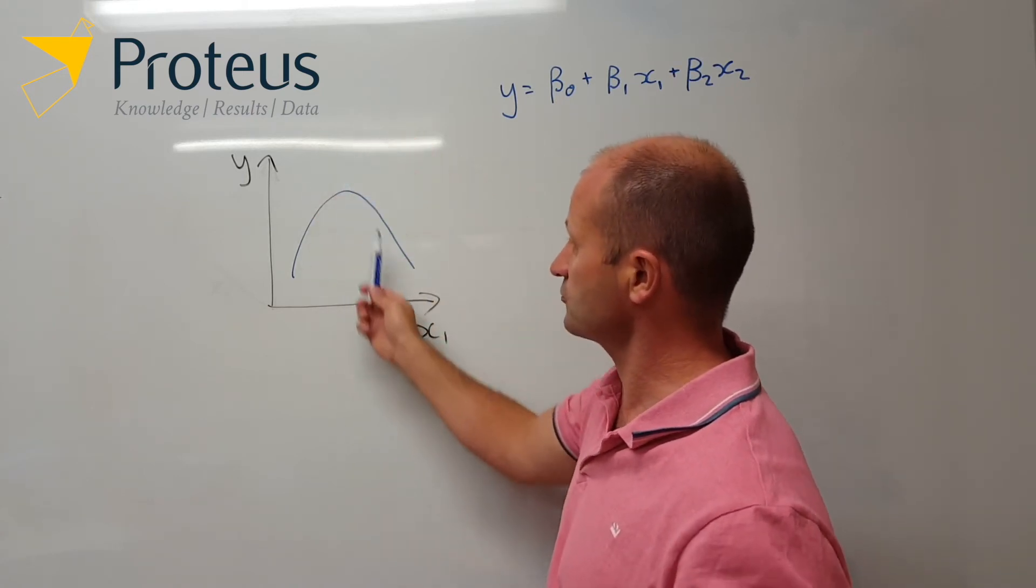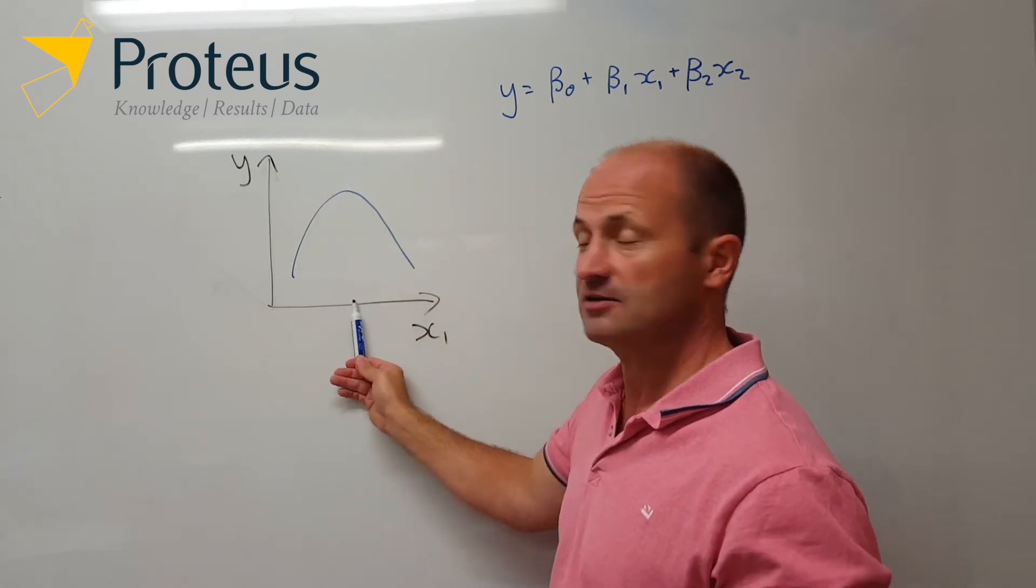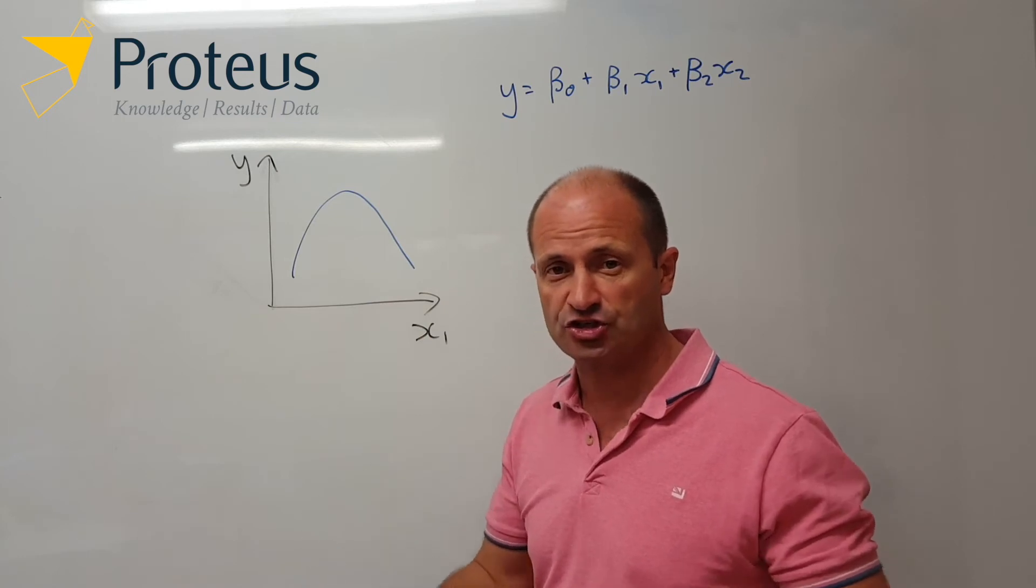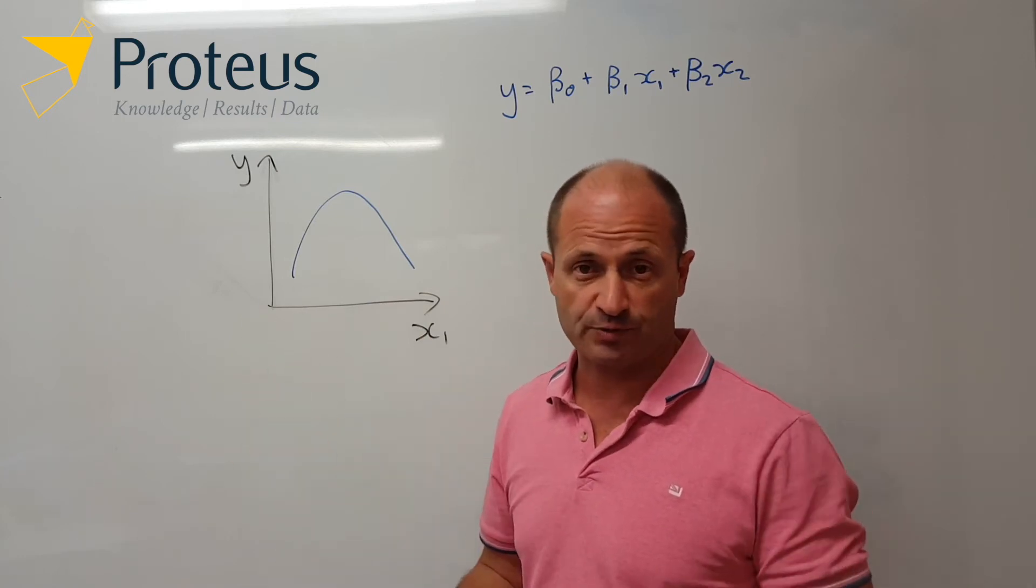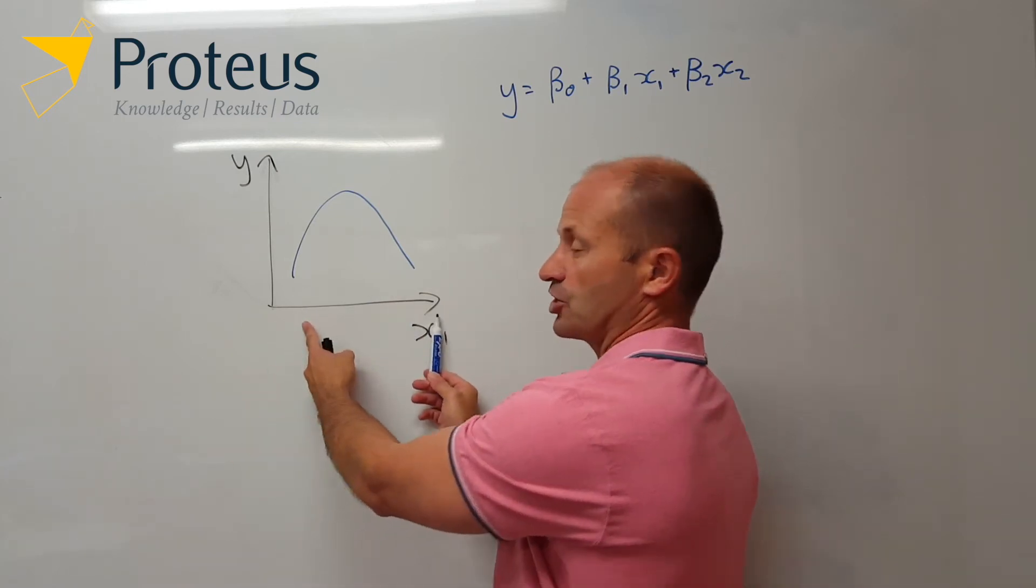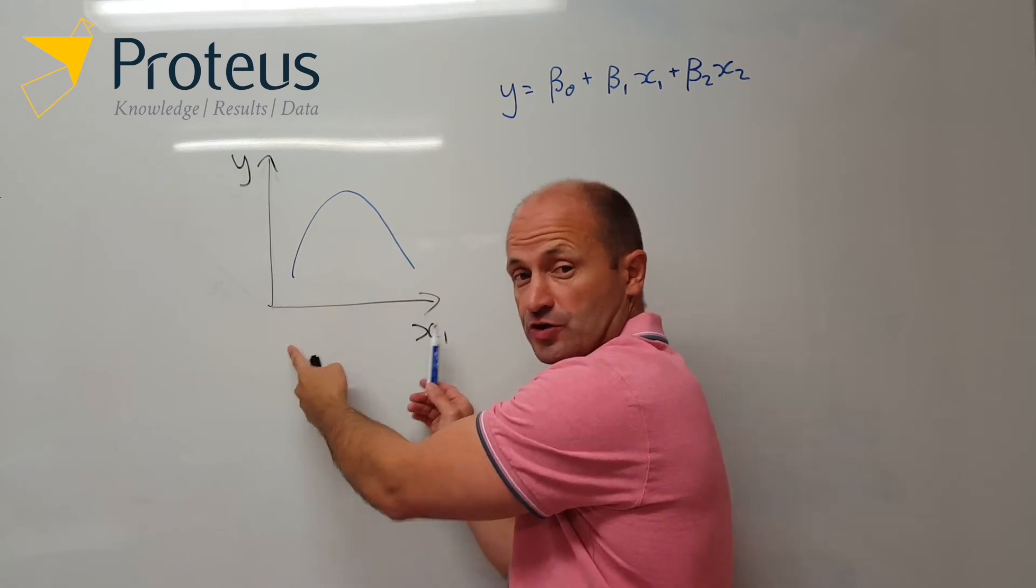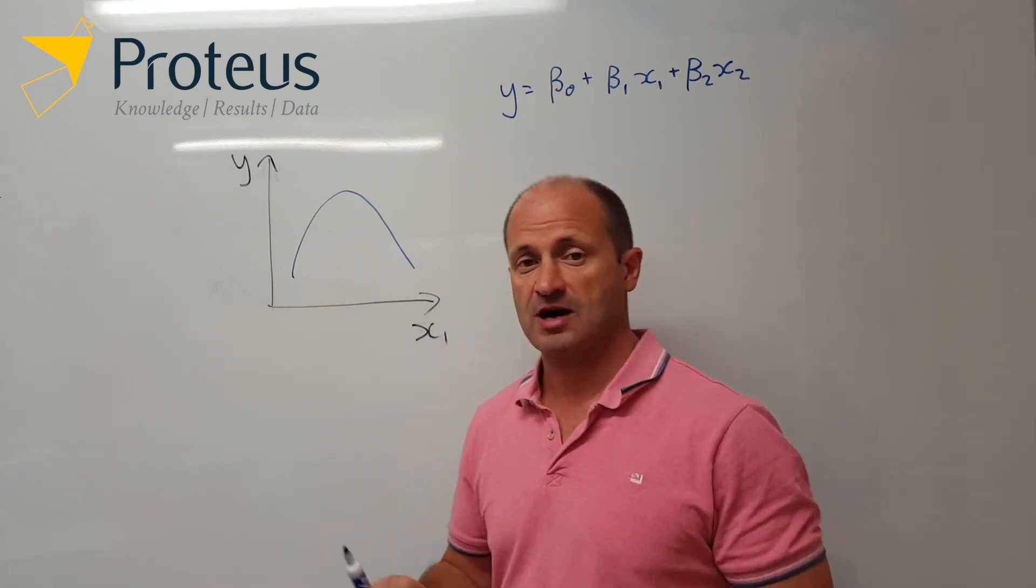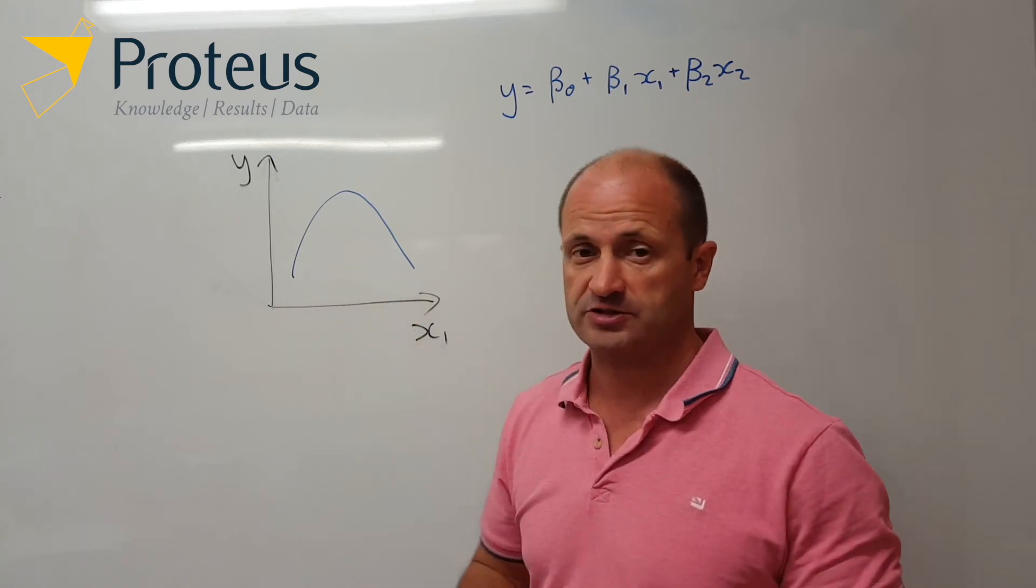And so what they're saying is that in this range here, of x1, the species likes those conditions, with a higher value for the response, whatever it happens to be. But as we go to different or more extreme values for x1, the species doesn't like that so much, so our response variable goes down.